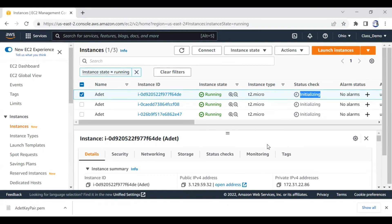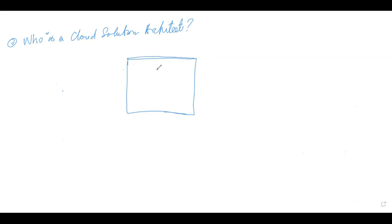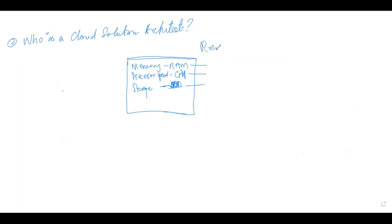Question about stopping versus terminating an instance - I'll explain the difference between stopping and terminating. It's good practice to always kill your services when you are not using them, otherwise you'll be wasting money. Let me go to the whiteboard. A computer has three resources by which you judge how powerful it is: one - memory, represented as RAM; two - processor speed, represented as CPU (central processing unit); and three - storage, represented as SSD. These three things are called system resources.